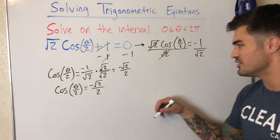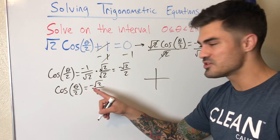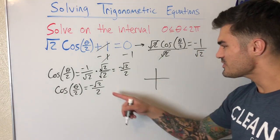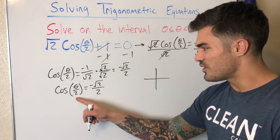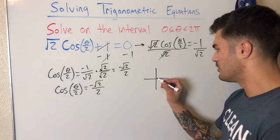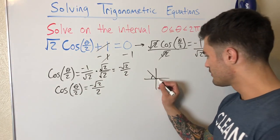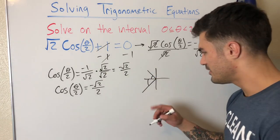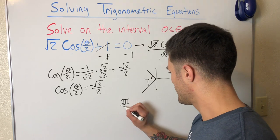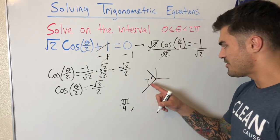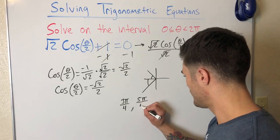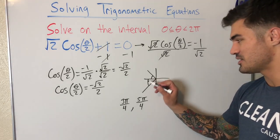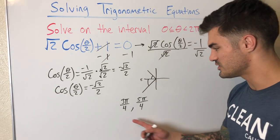What angle do I plug into cosine to get −√2/2? Since it's negative, we're in quadrant 2 or 3, where x is negative. The reference angle for √2/2 is π/4. So we have angles 3π/4 (which is π/4 short of π) and 5π/4 (which is π/4 past π). Those are the two solutions — but they're solutions for θ/2, not for θ.